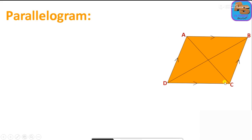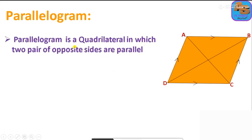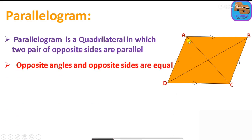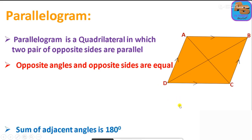Next is a parallelogram. This diagram shows two pairs of opposite sides are parallel. A parallelogram is a quadrilateral in which two pairs of opposite sides are parallel. The opposite angles are equal: angle A equals angle C, and angle B equals angle D. The opposite sides are also equal: AB equals DC and BC equals AD.